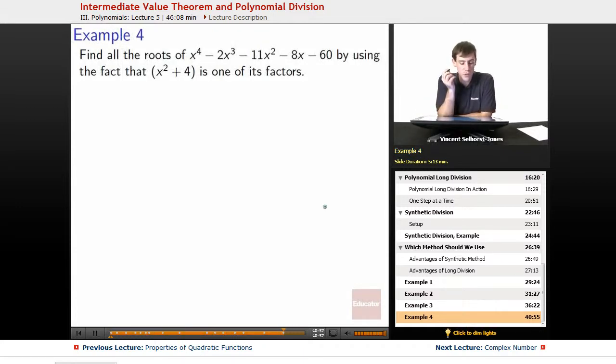All right, final example. Find all roots of x to the fourth minus 2x cubed minus 11x squared minus 8x minus 60 by using the fact that x squared plus 4 is one of its factors.